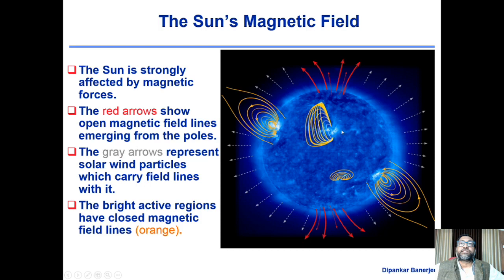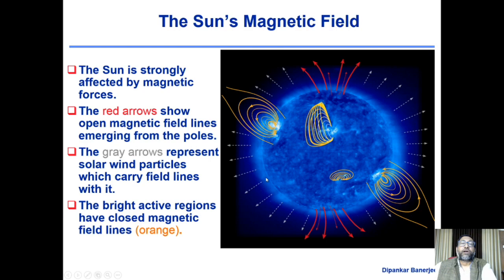Magnetic field cannot have a monopole — it has to connect somewhere. What appears as open field lines in the polar region probably connects somewhere down to the other polarity by a very long connectivity. Generally, wherever you have strong magnetic field concentrations like active regions, you have closed field lines; other regions have open field lines. This is the general picture of the solar magnetic field.